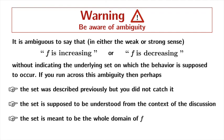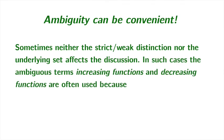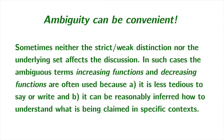Having given those warnings, I should point out that ambiguity can actually be convenient, believe it or not. Sometimes neither the strict/weak distinction nor the underlying set affects the discussion. In such cases, the ambiguous terms "increasing functions" and "decreasing functions" are often used because it's less tedious to say or write, and it can be reasonably inferred how to understand what's being claimed in specific contexts.